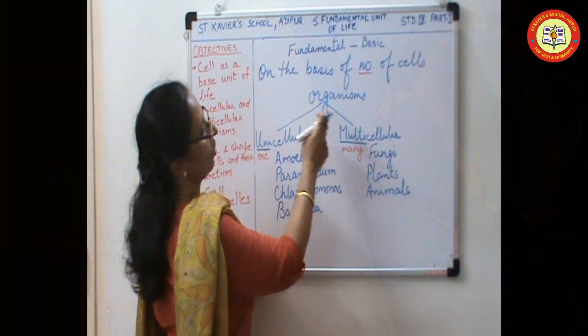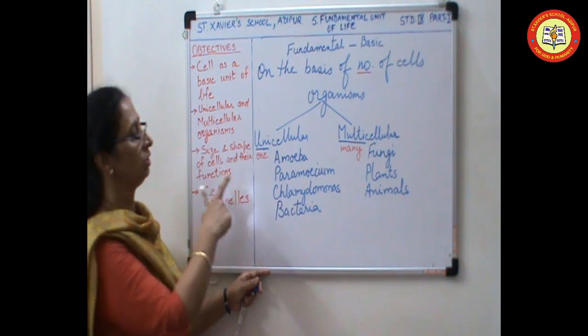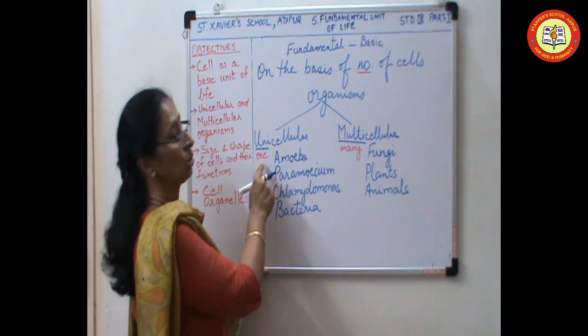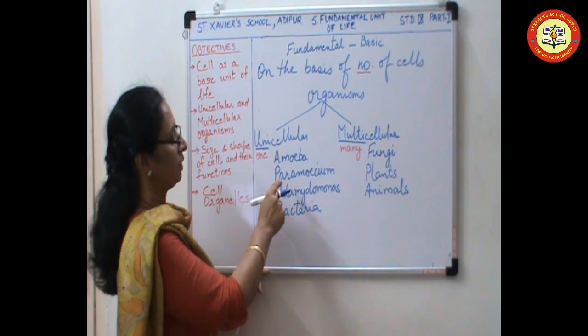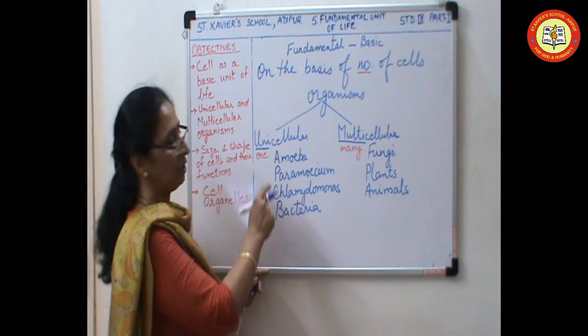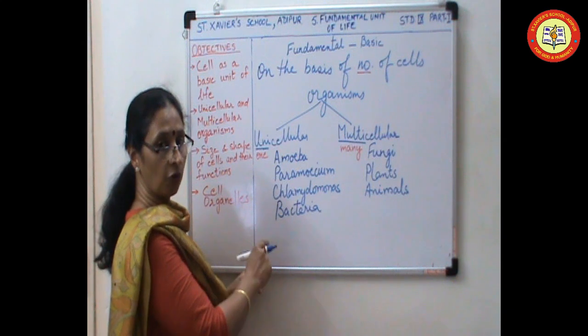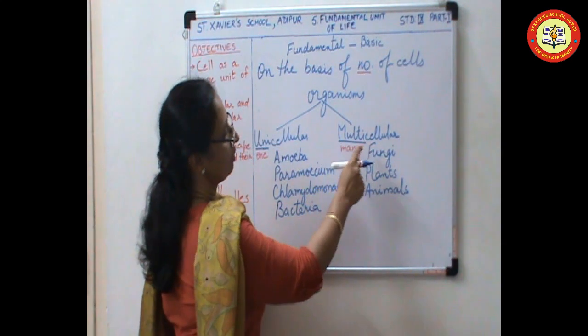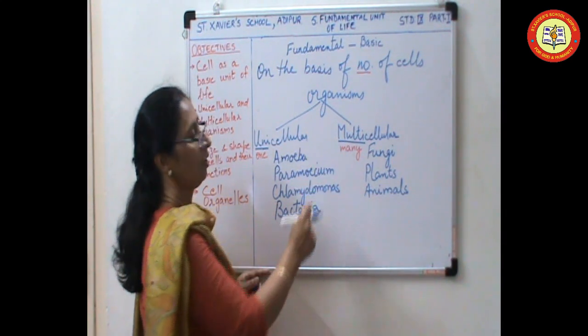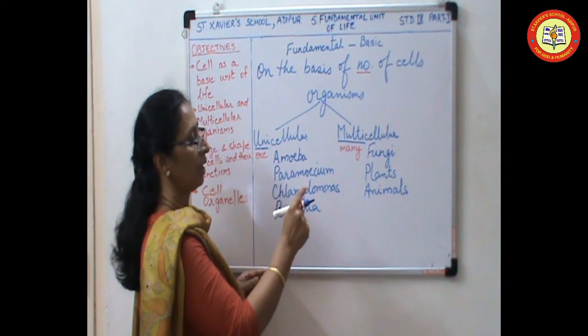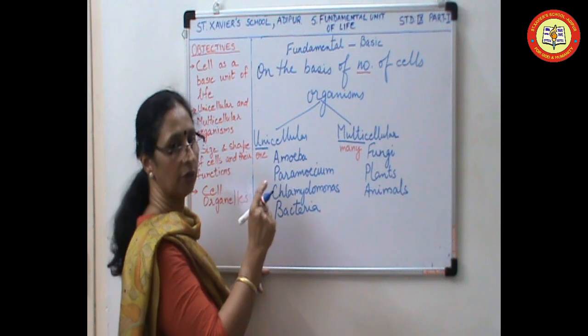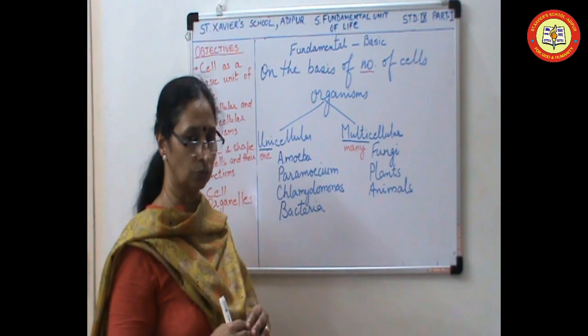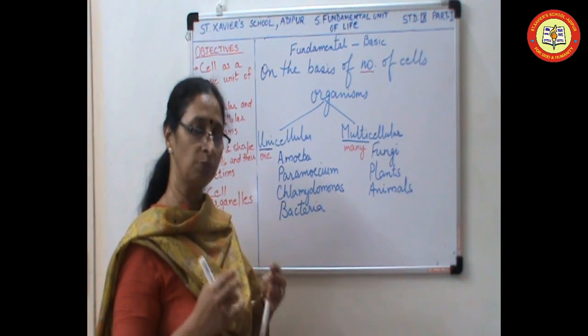On the basis of number of cells, organisms can be classified into two. Unicellular and multicellular. As the name suggests, unicellular means one, one cell organisms. Amoeba, Paramecium, Chlamydomonas, Bacteria. These organisms are formed from one single cell and they constitute the whole organism. Multicellular organism, multi means many, formed from many cells. Fungi, plants, animals are the examples of multicellular organisms. The cells in these organisms, they group together, form tissue. And these tissues form different parts of the body.